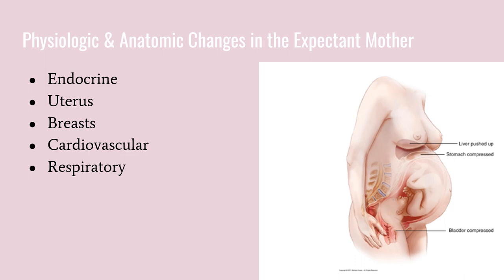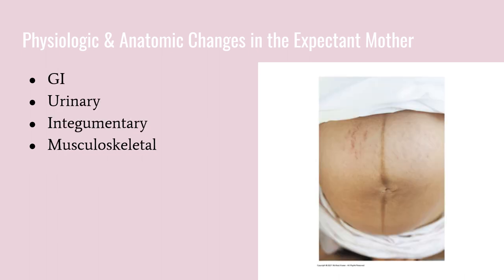Regarding the respiratory system, the amount of space available to house the lungs decreases as the uterus puts pressure on the diaphragm. This causes a pregnant woman to breathe faster and more deeply because she and the fetus need more oxygen. Regarding the GI system, smooth muscle relaxation and decreased peristalsis occur related to elevated progesterone levels, resulting in delayed gastric emptying.